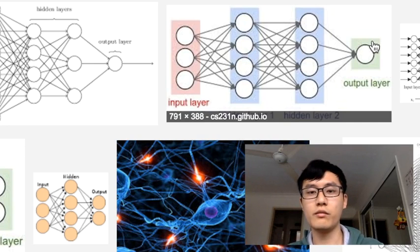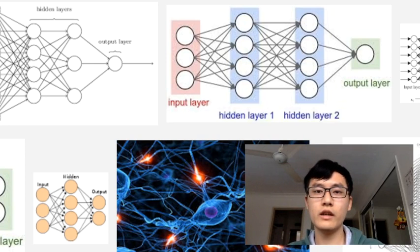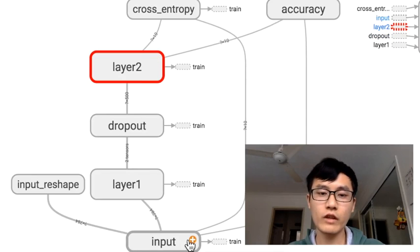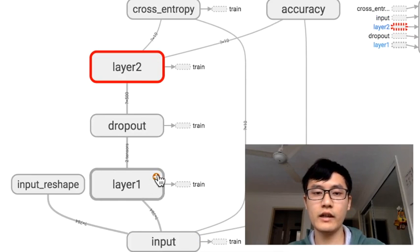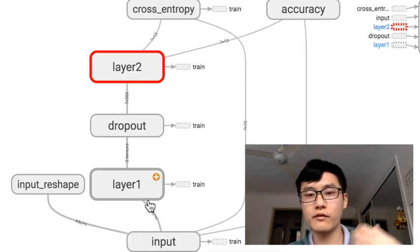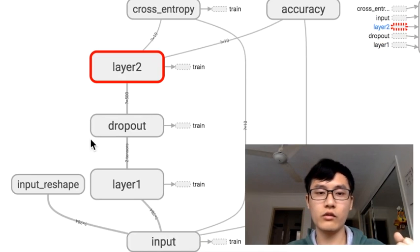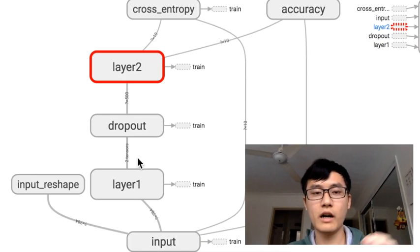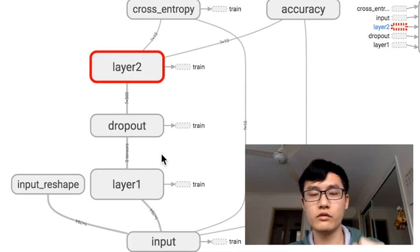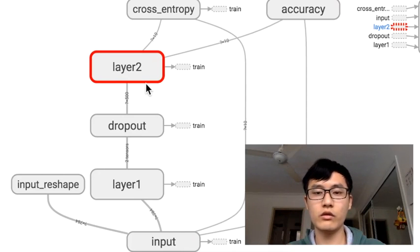In TensorFlow it's similar. We have the input layer, and this layer one is the hidden layer. Right now we'll ignore dropout, which is for regularization. We have another layer for prediction, which is the output layer.